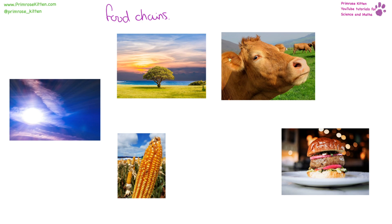All food chains start in the same place, with the sun providing energy. From this energy, things are going to grow — mainly plants — and they get eaten by other things. Whether it's grass being eaten by cows and then going on to be eaten by us, or whether we eat the plants directly, or whether corn is being turned into corn syrup used in ketchup — whether we eat them directly or process them, we are a top consumer. Whereas other things, like cows, are herbivores because they just eat plants.